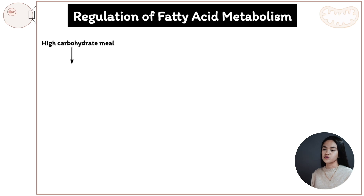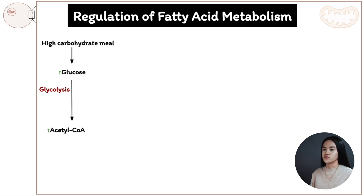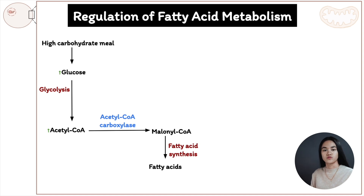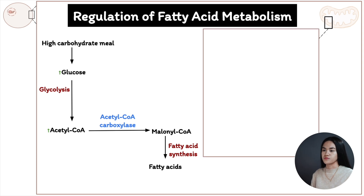When we have a high carbohydrate meal, blood glucose levels increase. Glucose enters glycolysis forming acetyl-CoA, and acetyl-CoA carboxylase catalyzes the formation of malonyl-CoA, which is an intermediate of fatty acid synthesis. The acetyl group from acetyl-CoA is the first acyl group, and subsequent acyls are from the malonyl group of malonyl-CoA. The fatty acid chain is extended by two carbon atoms after the first cycle.